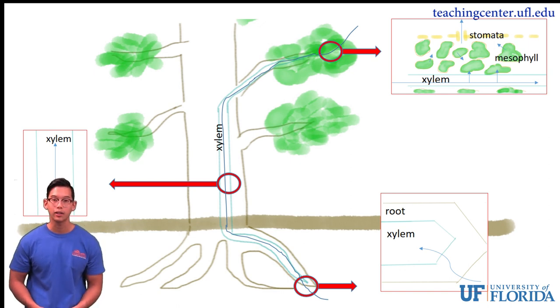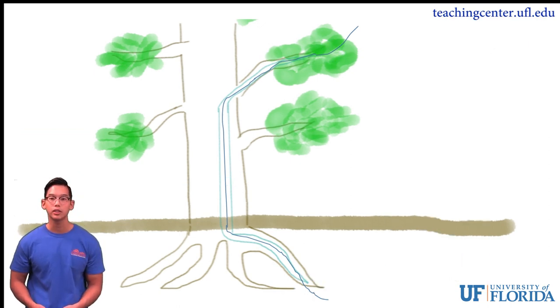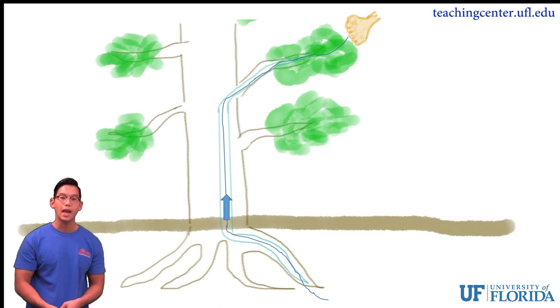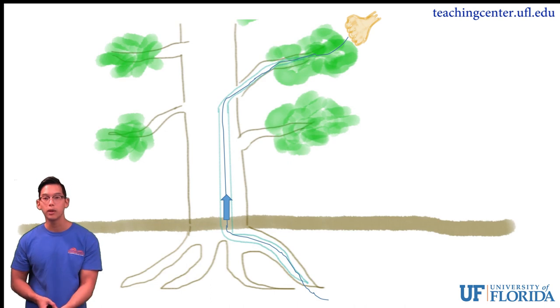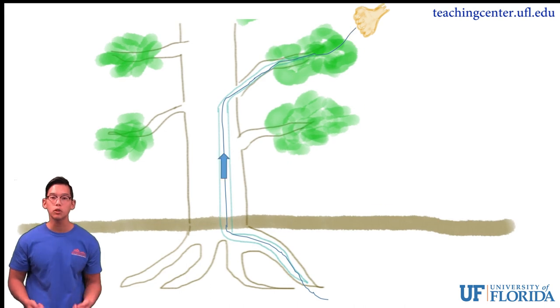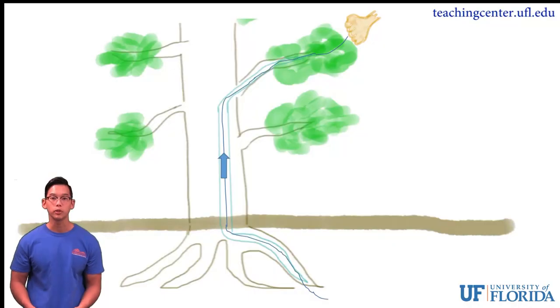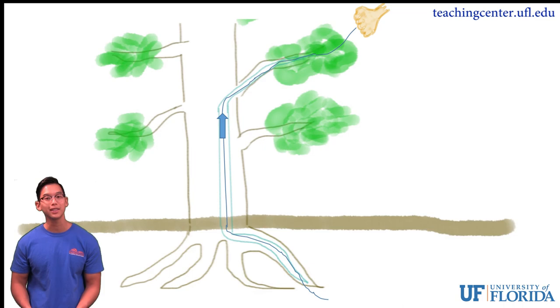In terms of our rope analogy, we can think of evaporation as a tug on our rope, and as evaporation continues, we can continue tugging on our rope as more and more water moves up from our roots and exits through the stomata of our leaves. And that's our video on transpiration.